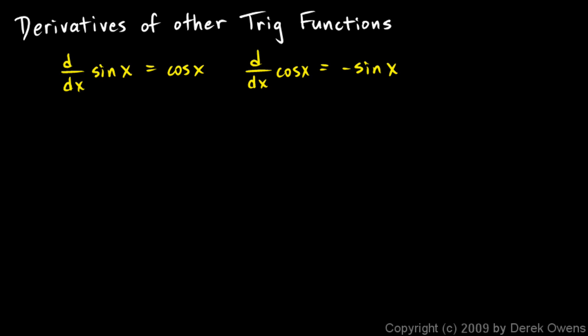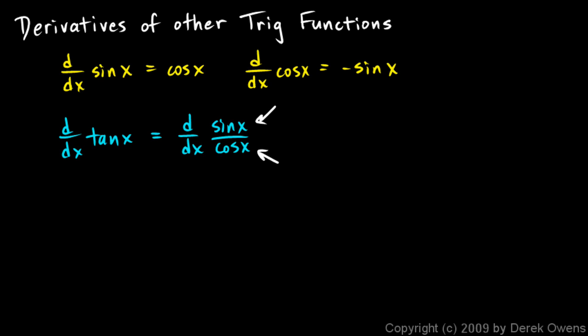Using just those two facts, we can differentiate the tangent function. To do this, all you have to remember is that tangent is sine over cosine. Tangent of x is sine x over cosine x. So the derivative of tangent x will be the derivative of sine x over cosine x. We know how to differentiate sine x, cosine x, and a quotient.